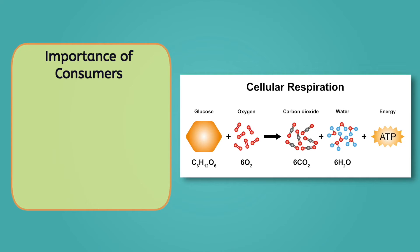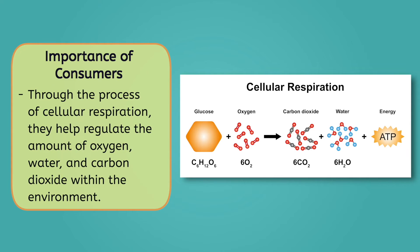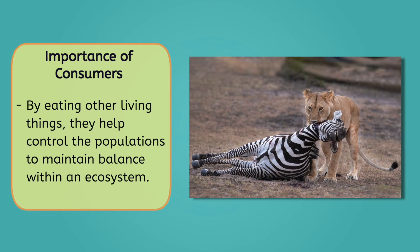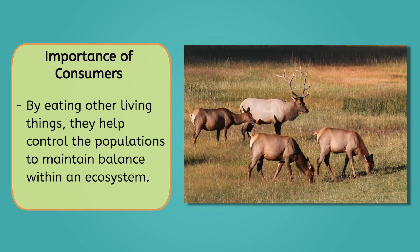Consumers are important because through the process of cellular respiration, they help regulate the amount of oxygen, water, and carbon dioxide within the environment. Additionally, by eating other living things, they help control the population of both producers and other consumers to maintain balance within an ecosystem. For example, when wolves disappeared from Yellowstone National Park in the 1900s, the elk that was their natural prey became overpopulated, eating too many plants and disrupting the entire ecosystem.